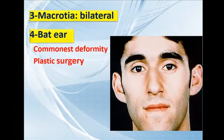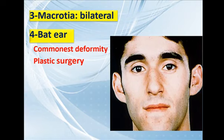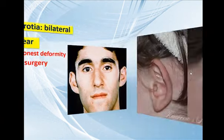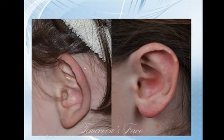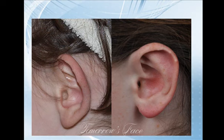The third one is an abnormally large auricle, called macrotia. It is usually a bilateral condition and should be left alone unless the patient complains of its shape. The commonest deformity of the auricle is the bat ear — an abnormally protruded auricle that sticks out laterally. It is only a disfigurement, but if it is annoying the patient, it can be corrected surgically by a plastic surgeon.